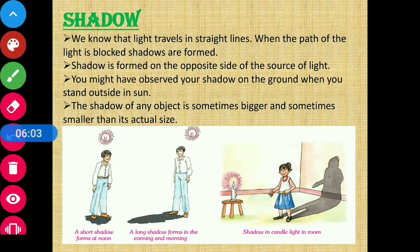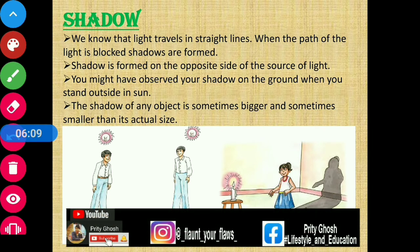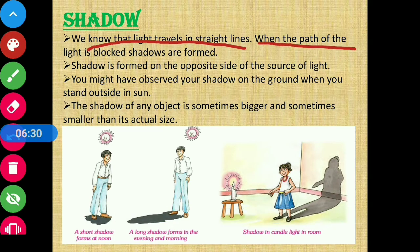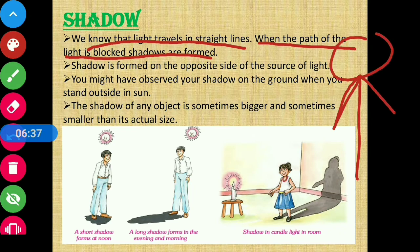Now moving on to our next topic for discussion, which is also related to light — that is shadow, humari jo parchhain hoti hai. Now we know that light travels in a straight line — light jo hai woh straight jati hai, woh zigzag way mein nahi jati. So when the path of light is blocked, shadows are formed — jab yeh straight jaane waali light ke raaste pe koi block ho jata hai, means koi blocking material aa jati hai, us time pe shadow ka formation hota hai.